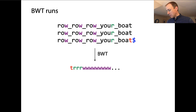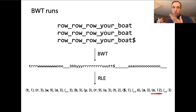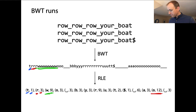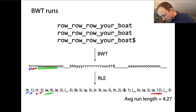Here's the entire BWT — nice long runs, including a run of length 12. The average run length, measured by taking the character and how many times it occurs per run (T:1, R:3, W:9, and so on), comes out to about 4.27. So with three copies of Row Row Row Your Boat, we get a transformed string with about 15 runs and an average run length of 4.27.